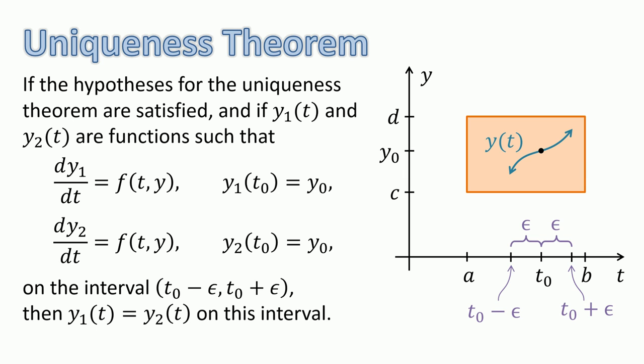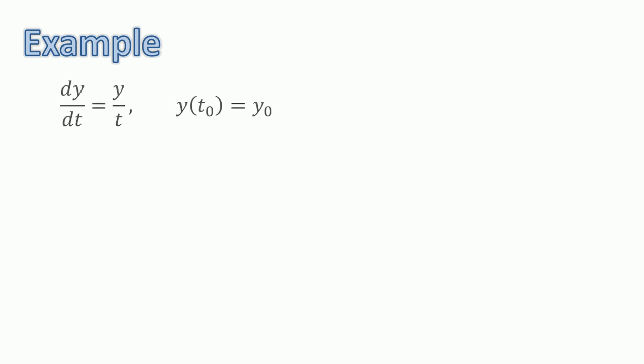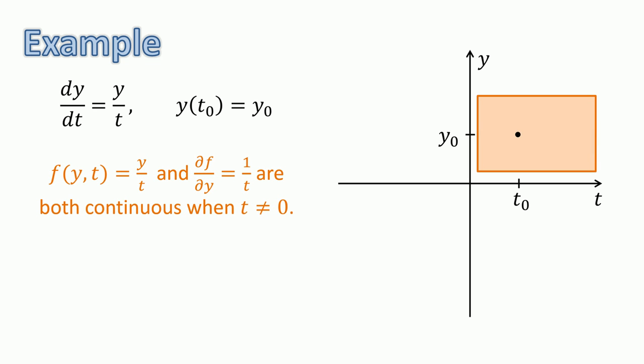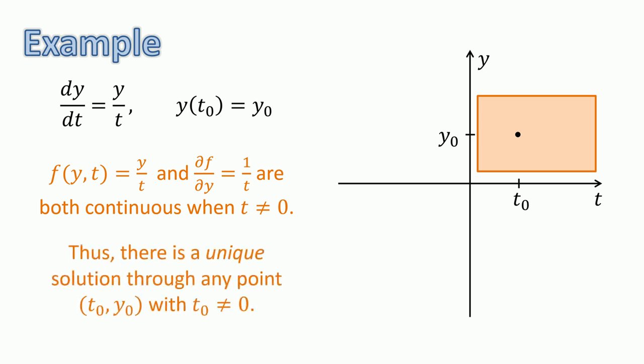Since the conditions for the uniqueness theorem are stronger than those for the existence theorem, the two theorems are often combined and stated as one existence and uniqueness theorem. Returning to our example, dy/dt equals y divided by t — a solution exists through any point (t0, y0) with t0 not equal to 0. Since f(t, y) equals y over t and its derivative with respect to y, df/dy equals 1 over t, are both continuous in a rectangle containing such a point, the uniqueness theorem tells us that the solution through this point is unique. However, as before, the theorem doesn't tell us what happens at points where t equals 0.